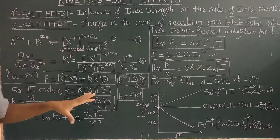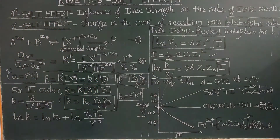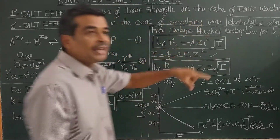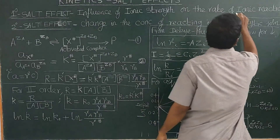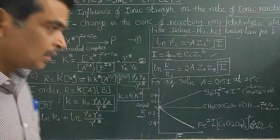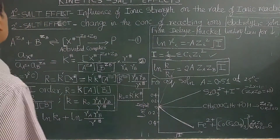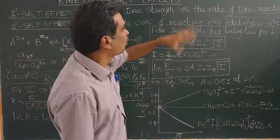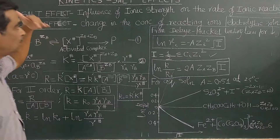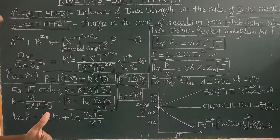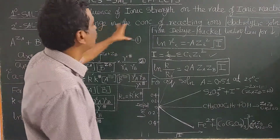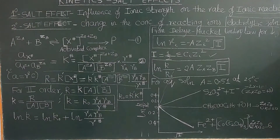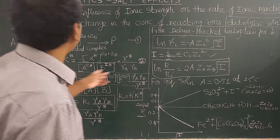There are two types of salt effects: primary salt effects and secondary salt effects. Primary salt effects deal with the study of ionic strength or addition of electrolytes on the rates of ionic reactions. Only ionic reactions are affected by the increase in ionic strength or by addition of electrolytes. Secondary salt effect is the study of change in the concentration of reacting ions — for example, iodide ion — upon addition of electrolytes or upon increase in ionic strength.